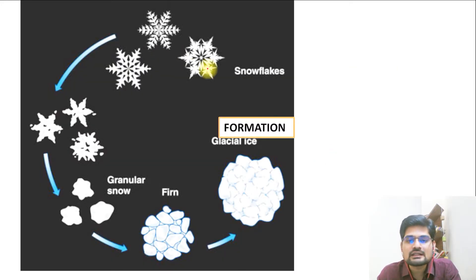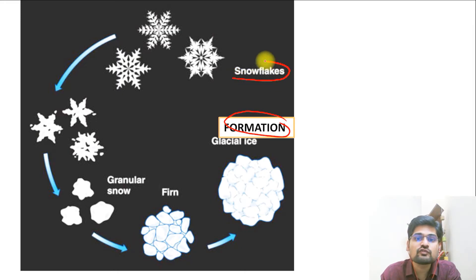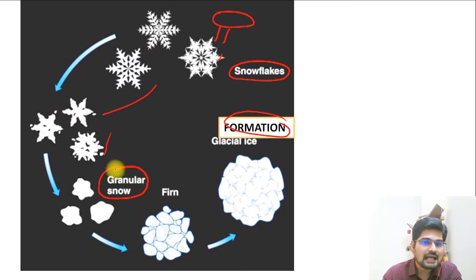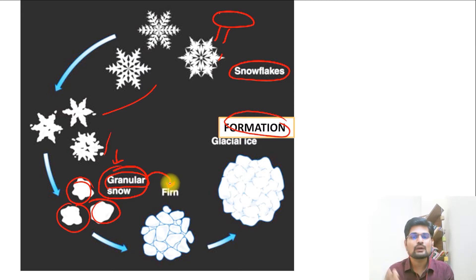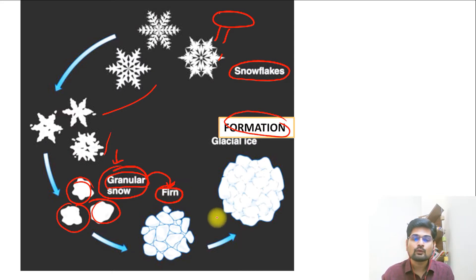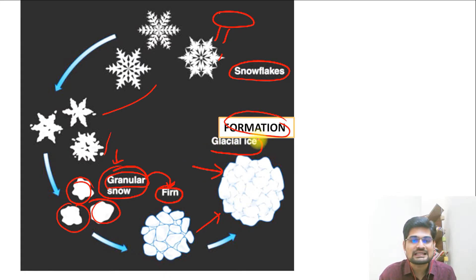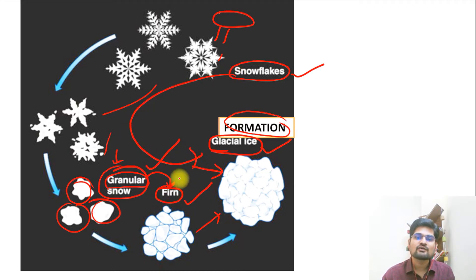The first important thing we need to learn is the formation of a glacier. It begins with snowflakes from precipitation. When snowflakes accumulate, they gradually acquire a granular shape — all those small flakes of snow fuse together to form grains. From the granular structure, coalescence of grains occurs, forming something called firn. When firn becomes large with further layer-upon-layer deposition, a thick mass of ice forms, called glacial ice. The journey is: snowflake → granular snow → firn → glacial ice.